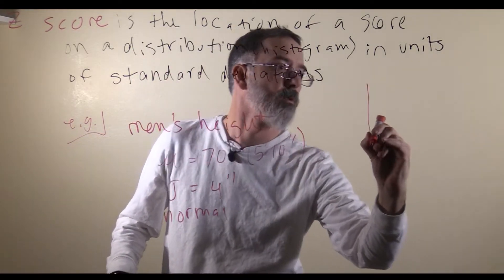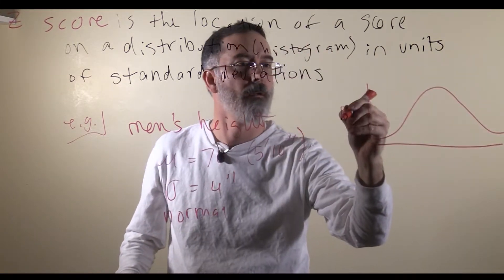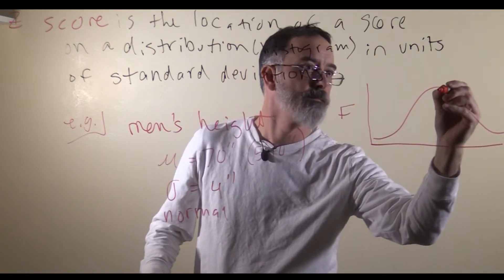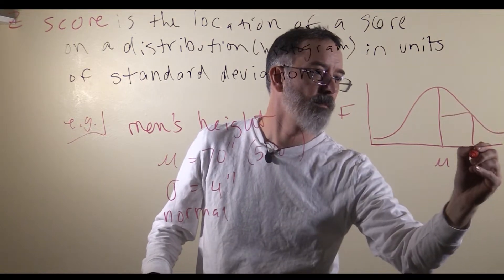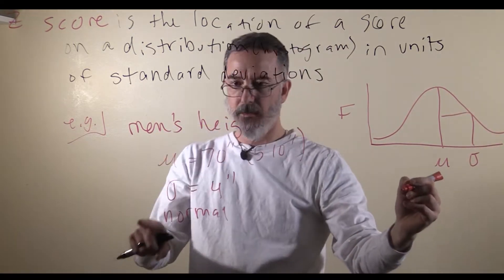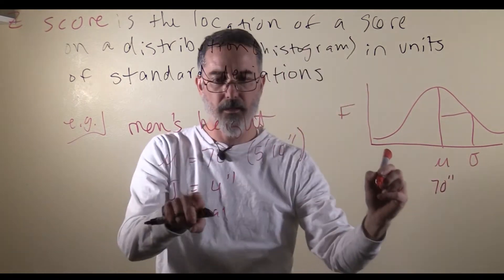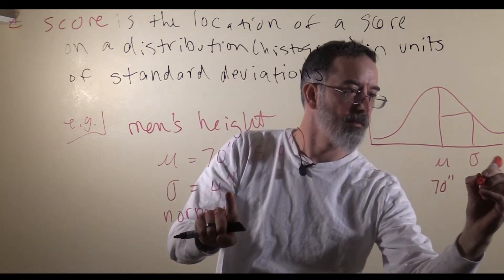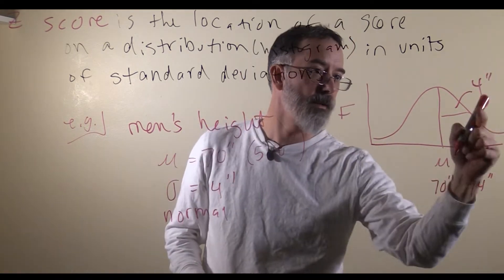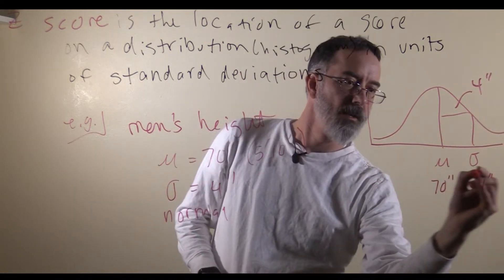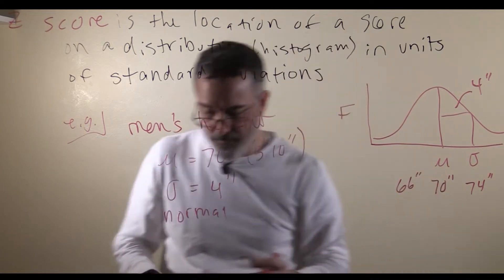We can draw it. Here is the mean. One standard deviation over: the mean is 70 inches, so going over 1 standard deviation gives 74 inches — that is 4 inches for 1 standard deviation. Going down 1 standard deviation gives 66 inches.